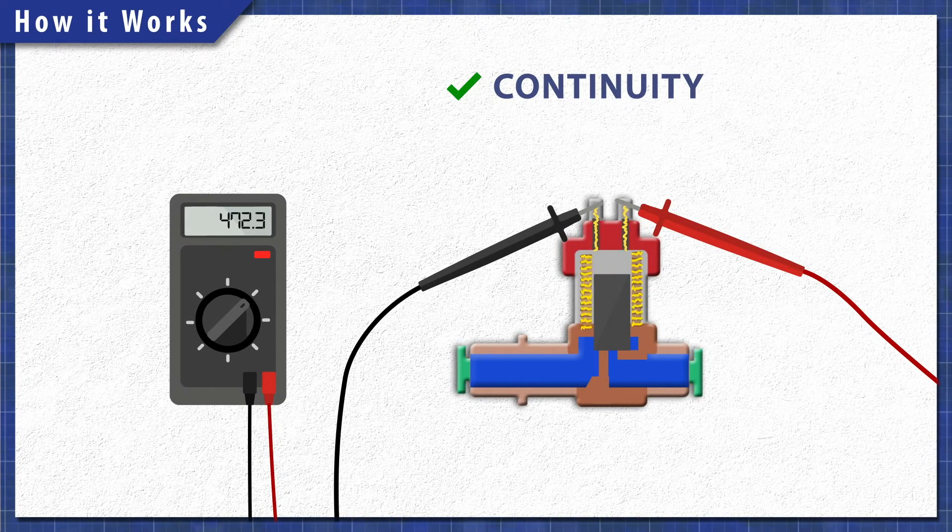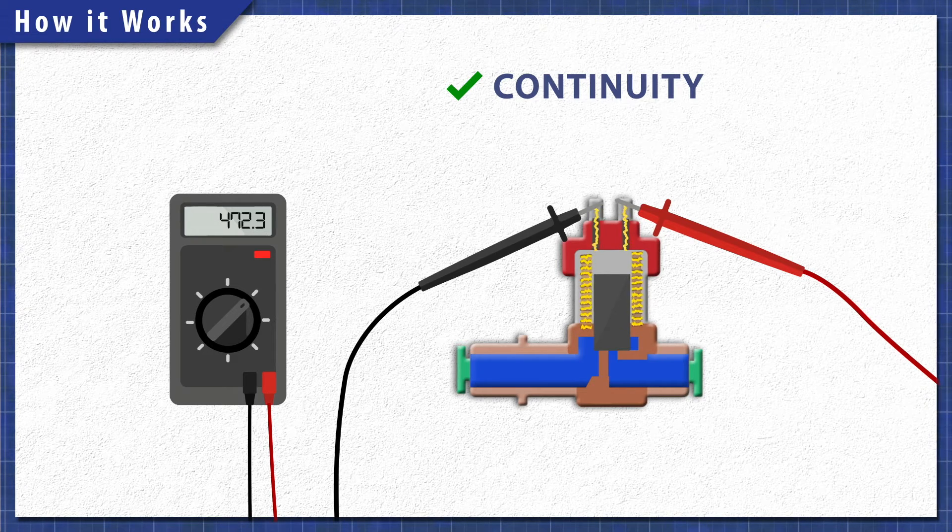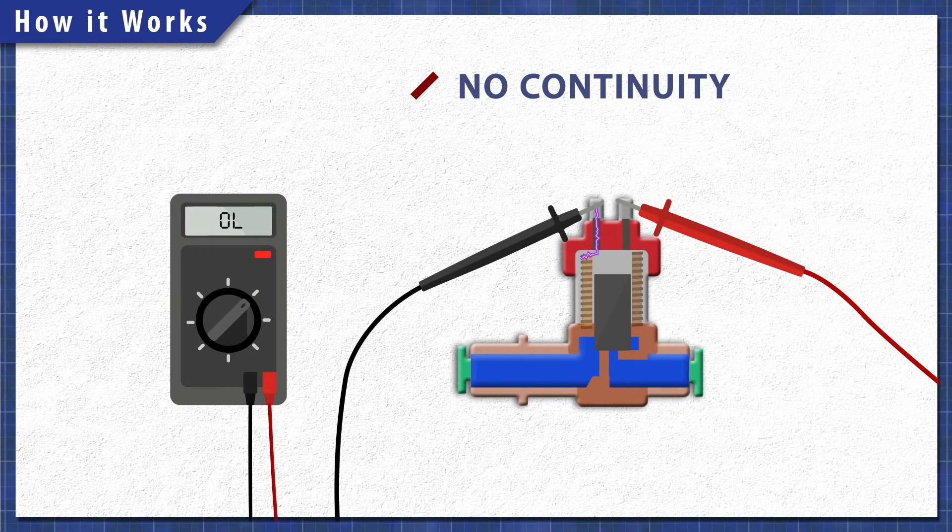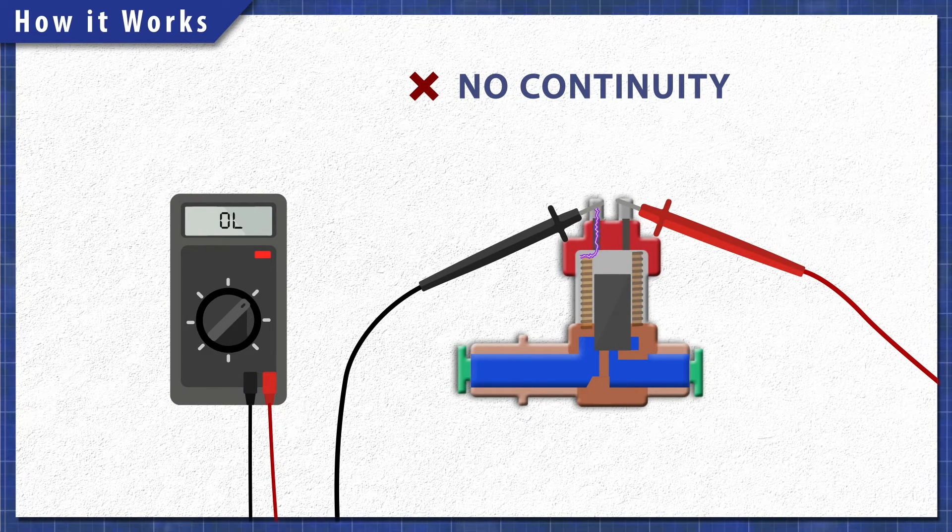We can test the solenoid for continuity. A continuity test will determine if there is a continuous path for electricity to flow through. Without continuity, the solenoid will not work.